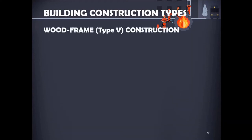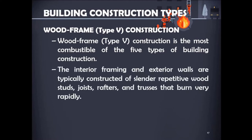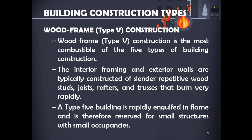Fifth is wood frame Type 5 construction, the most combustible of the five types of building construction. A wood frame building is the only one of the five types that has combustible exterior walls. The interior framing and exterior walls are typically constructed of slender, repetitive wood studs, joists, rafters, and trusses that burn very rapidly. Flames can spread out a window and then along the outside wood walls. A Type 5 building is rapidly engulfed in flame and is therefore reserved for small structures with small occupancies.